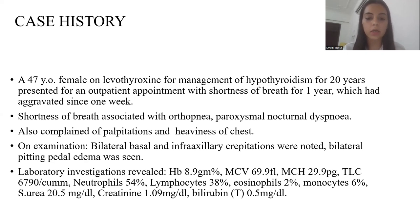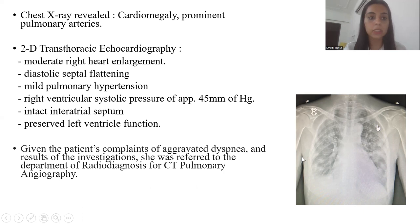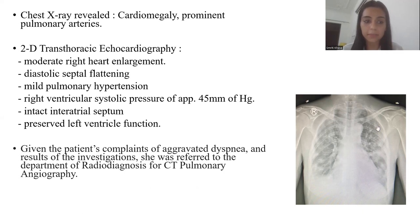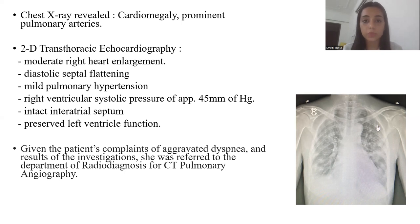Laboratory investigations were sent, most of which were normal except for low hemoglobin. Chest x-ray findings were suggestive of cardiomegaly and prominent pulmonary arteries. 2D transthoracic echocardiography was also performed, which showed moderate right-sided heart enlargement, diastolic septal flattening, mild pulmonary hypertension, right ventricular systolic pressure increased at approximately 45 mmHg, intact interatrial septum, and preserved left ventricular function. Given the patient's complaints of aggravated dyspnea and results of the investigations, she was referred to the Department of Radio Diagnosis for CT pulmonary angiography.